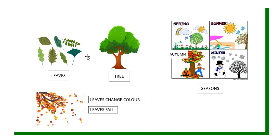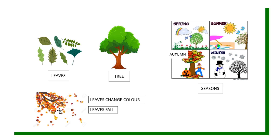Hello everybody! Today we're going to talk about trees. This is a tree, and a tree has got leaves. We're also going to review the four seasons: spring, summer, autumn, and winter. These are leaves falling from the tree.